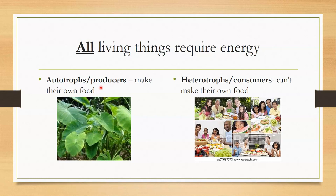Without autotrophs or producers, heterotrophs would not be able to survive. Heterotrophs are often called consumers because they cannot make their own food. Heterotrophs or consumers depend on other organisms as a source of their food, or to supply them with energy. Heterotrophs can break down food molecules to convert their own form of energy.